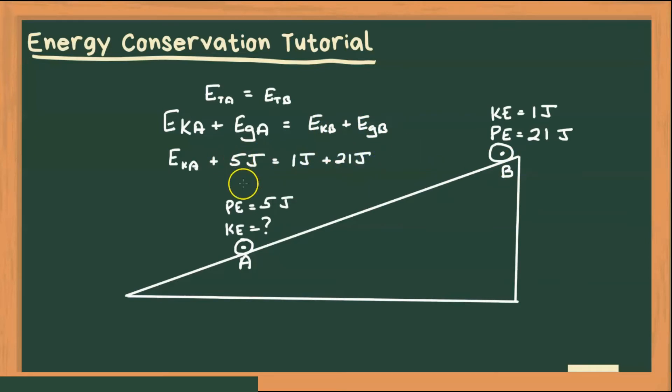Therefore, bringing 5 joules to the other side of the equation, we get the kinetic energy at A as 1 plus 21, which is 22 joules, minus that 5 joules, which is 17 joules.